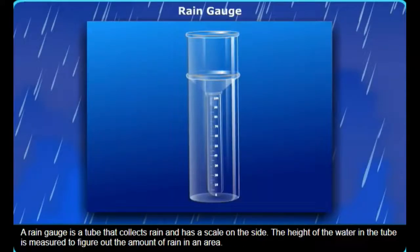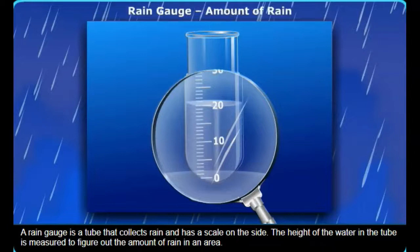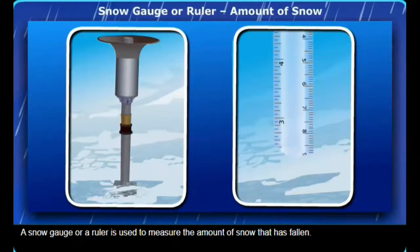A rain gauge is a tube that collects rain and has a scale on the side. The height of the water in the tube is measured to figure out the amount of rain in an area. A snow gauge, or a ruler, is used to measure the amount of snow that has fallen.